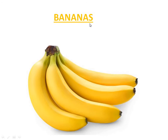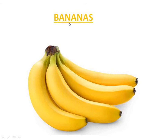Now coming to another fruit — these are bananas. They are yellow in color. The spelling is B-A-N-A-N-A, banana, or B-A-N-A-N-A-S, bananas.